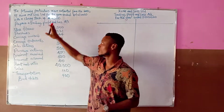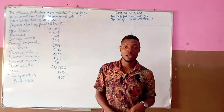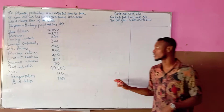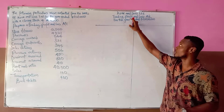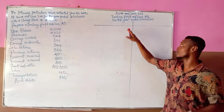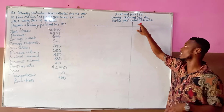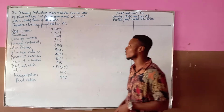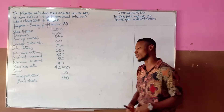We are given transactions to enter in a trading profit and loss account using a T format. The heading is 'Quora and Sons Limited Trading Profit and Loss Account', and the accounting year ended 31st December 2020.